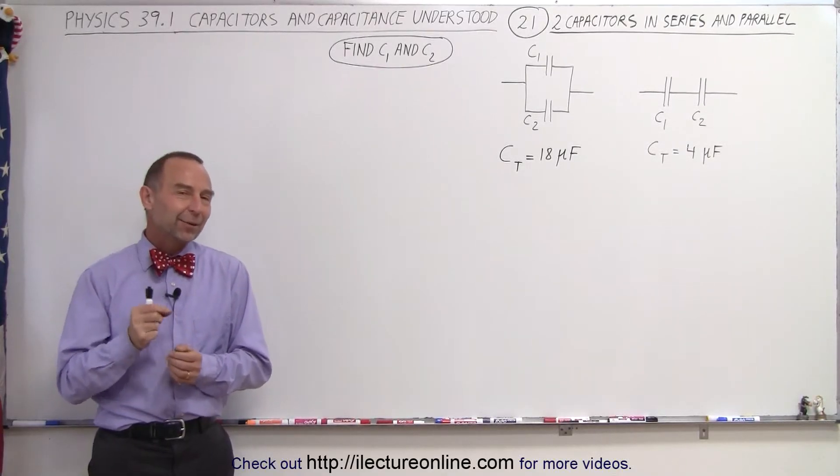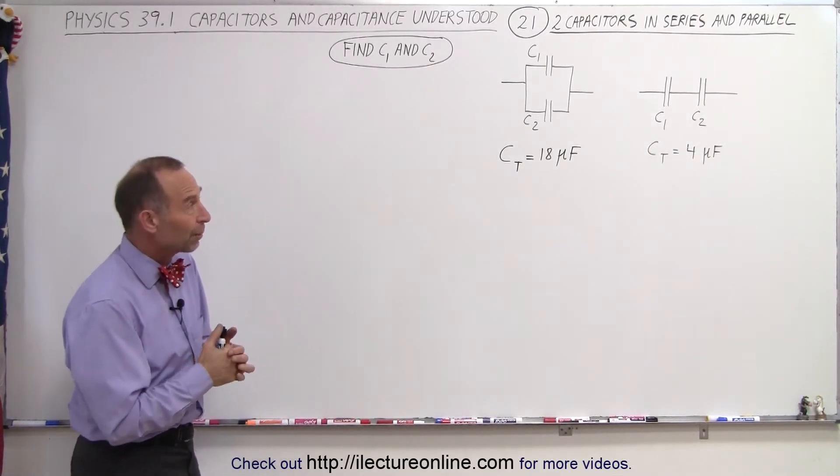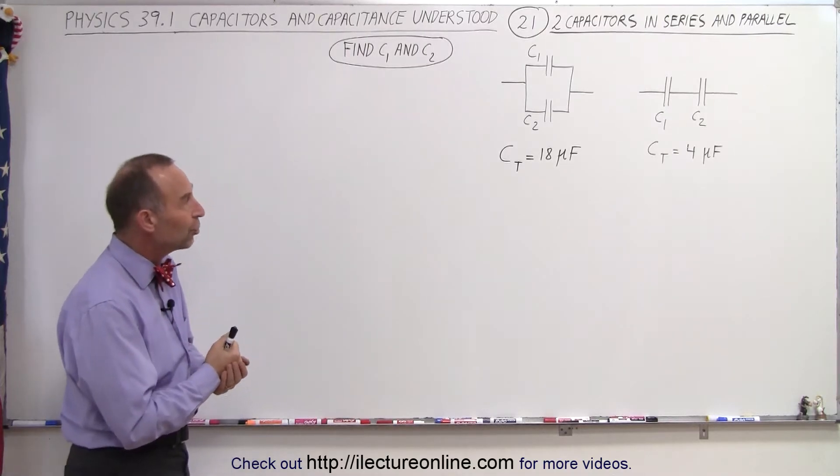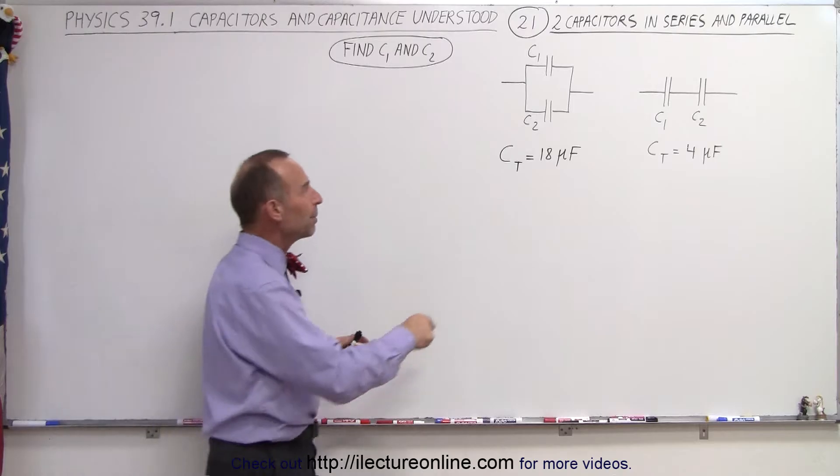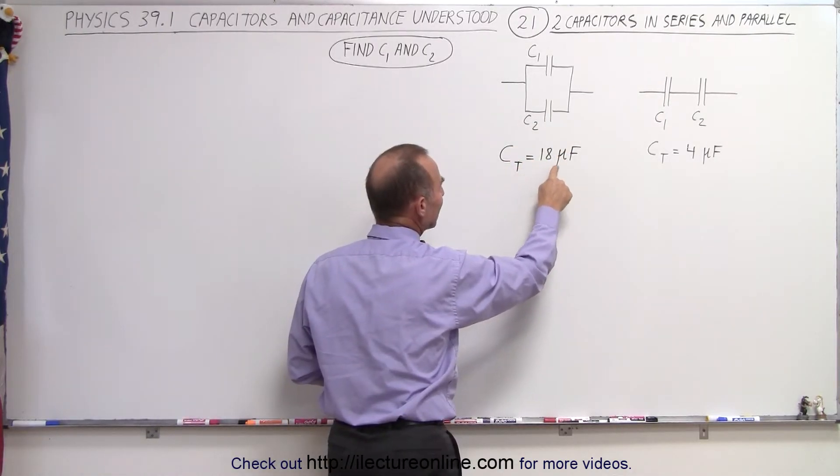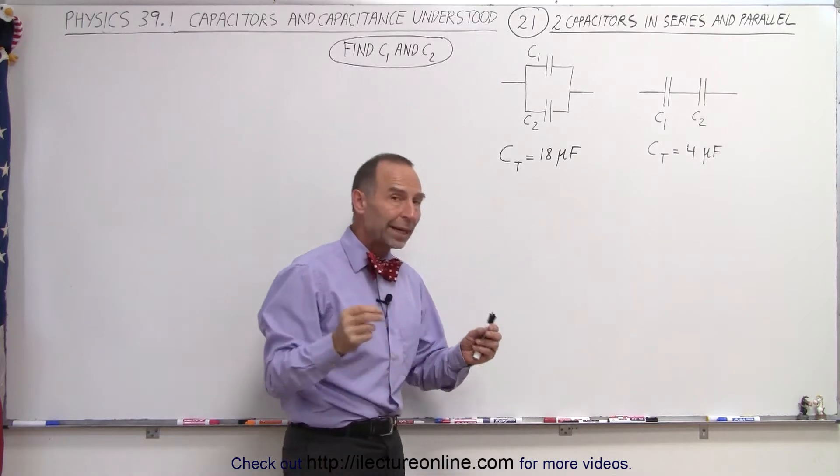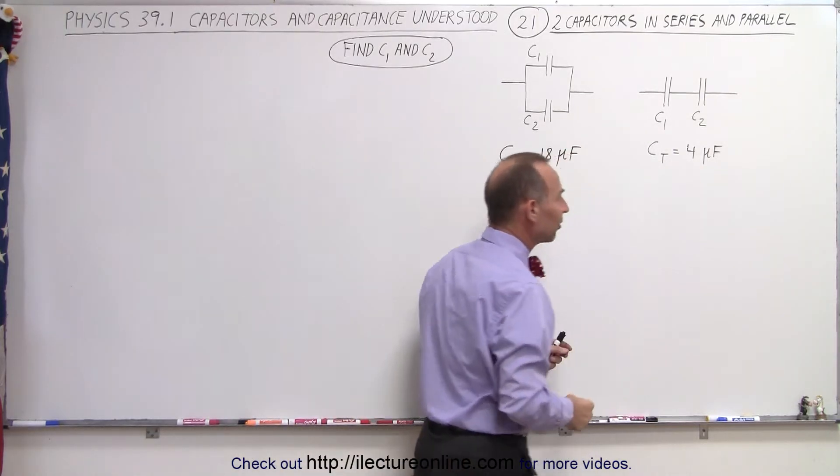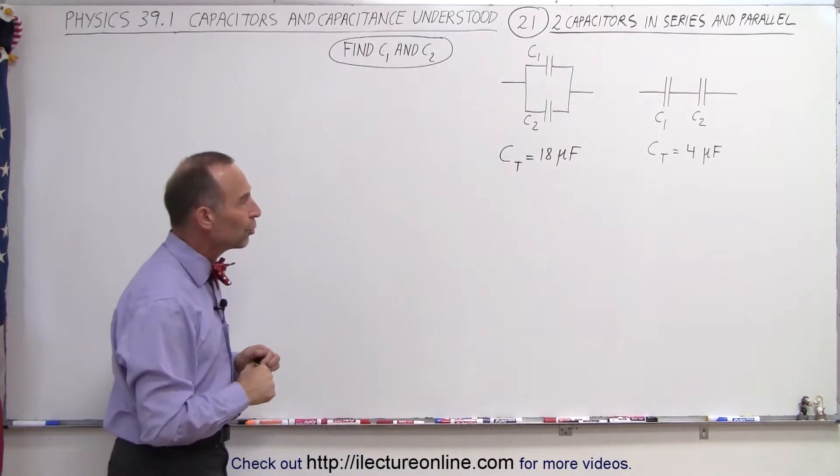Welcome to ElectronLine. Here we have an interesting and challenging problem for us. We have two unknown capacitors, C1 and C2, and when we connect them in parallel, their total capacitance or equivalent capacitance is 18 microfarads, but when we connect them in series, their total capacitance is 4 microfarads. We need to find the values of C1 and C2.